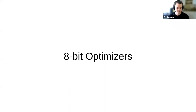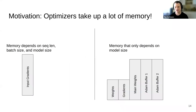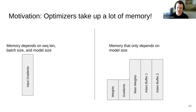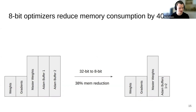Now we talk about 8-bit optimizers. The main motivation is: if you look at training, we have input gradients, weights, gradients, main weights for mixed precision training, and Adam optimizer states. The Adam optimizer has two buffers each as large as the weights, and these are usually 32-bit, taking up quite a bit of memory. With 8-bit optimizers, we can reduce memory by approximately 40%, compressing those 32-bit Adam buffers to 8-bit.